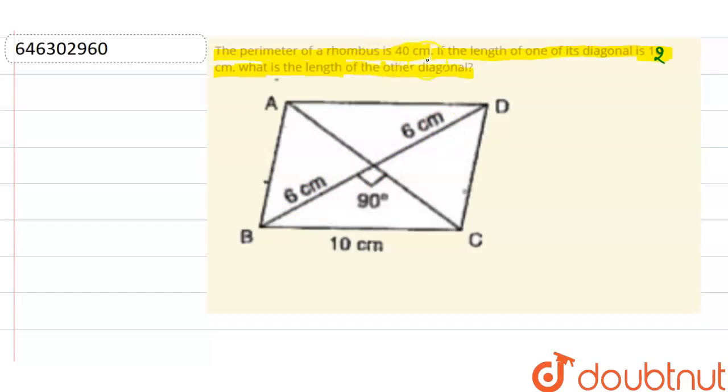So, the perimeter of rhombus is given to us. That is P is equal to 4 into side. So, from here, side is equal to P upon 4. That means 10 cm, which is the side of this rhombus.